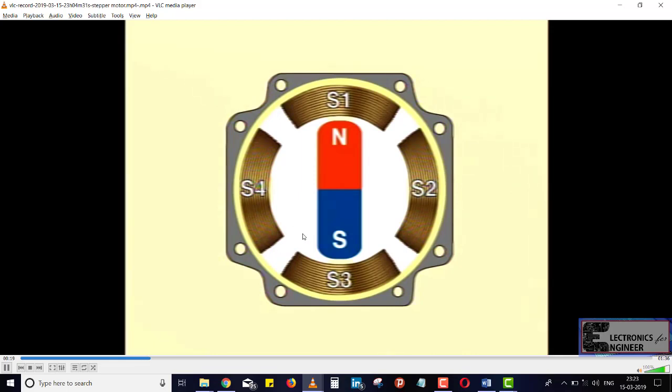When direct current passes through the S1 coil, it becomes an electromagnet and draws the rotor poles. The rotor stops facing S1.